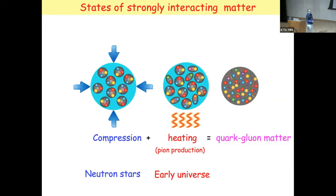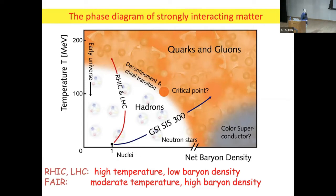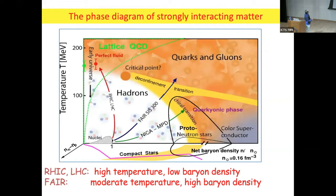We study this field of physics through a phase diagram with net baryon density and temperature axes. Neutron stars sit at highest density and near-zero temperature. Laboratories like the Relativistic Heavy Ion Collider and the Large Hadron Collider reach very high temperature and very low density. When I started my career three decades ago, the phase diagram was simple; today it is agreed that there is a crossover phase transition, with no hint of a critical point yet.